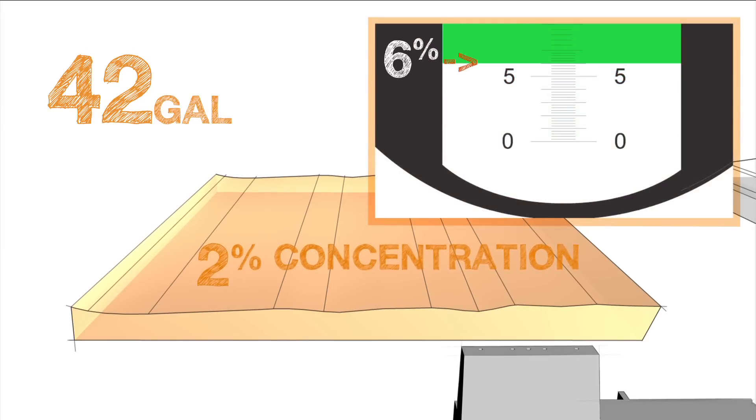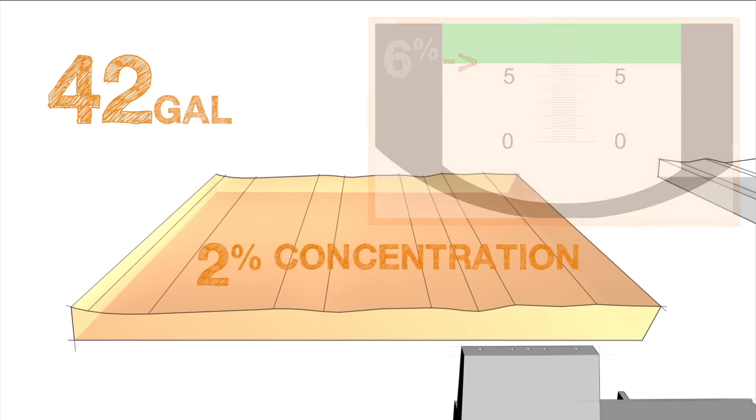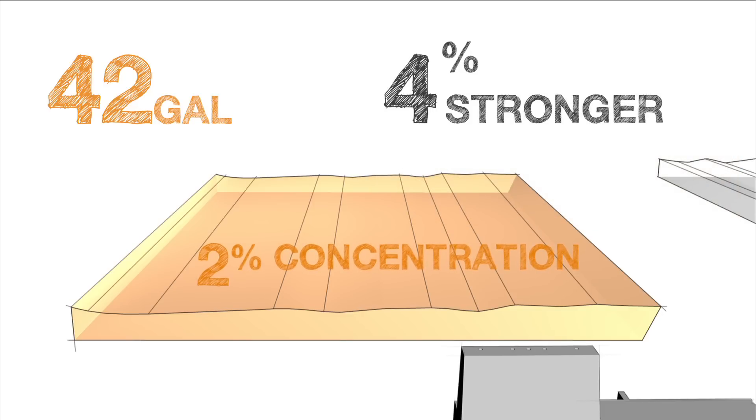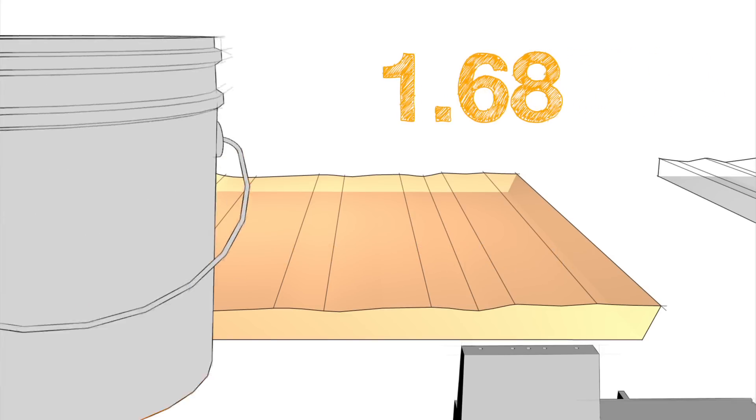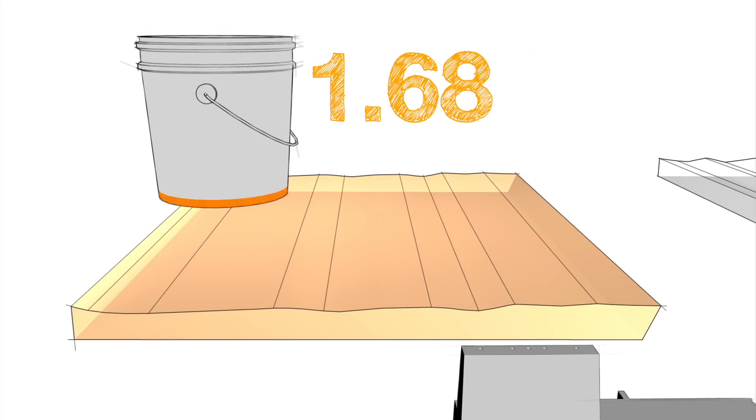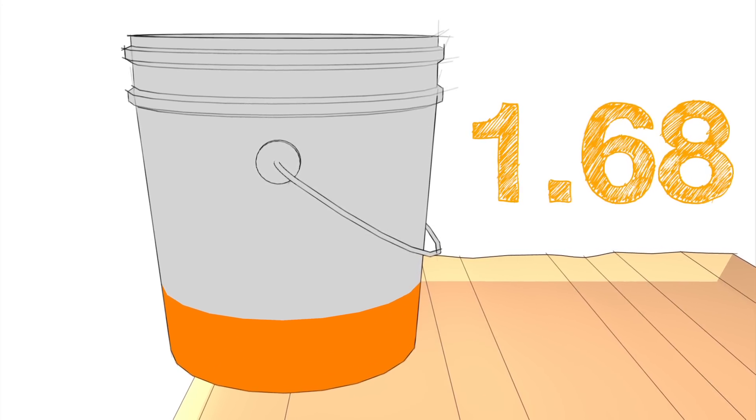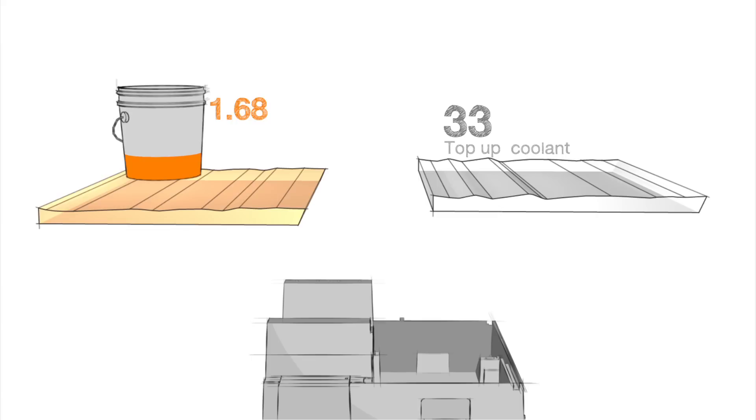To adjust the 42 gallons of coolant up to a concentration of six percent, we need to make the solution four percent stronger. We multiply 42 by 0.04 and get 1.68, so we need an additional 1.68 gallons of concentrate to fix the existing 42 gallons.